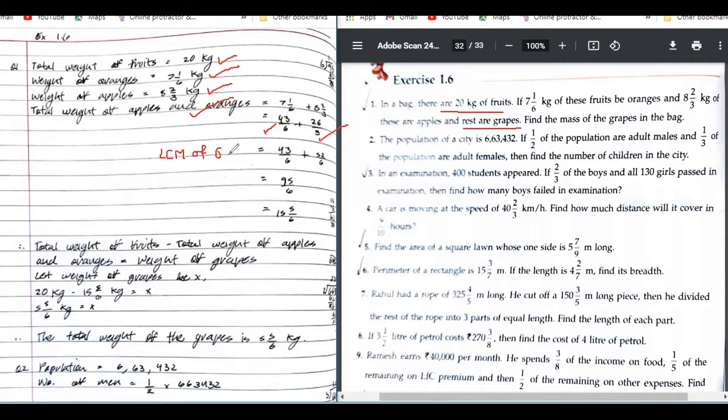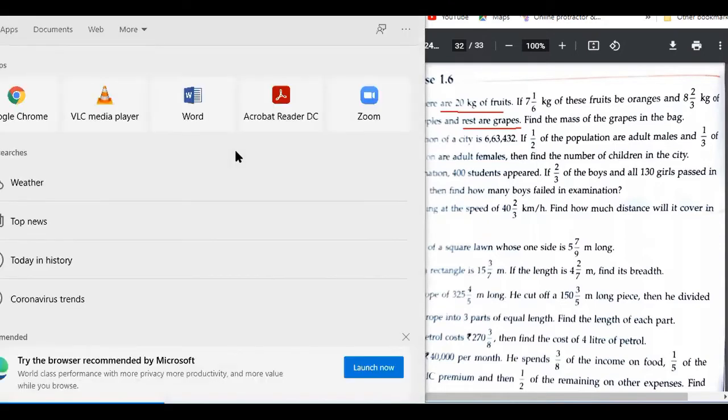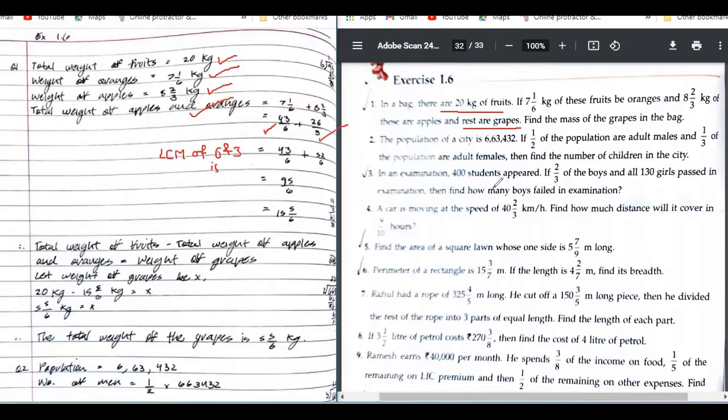LCM of 6 and 3 is 6. Multiplying it by 2 you got 52/6, so 95/6. Again converting into mixed fraction, 95 divided by 6.